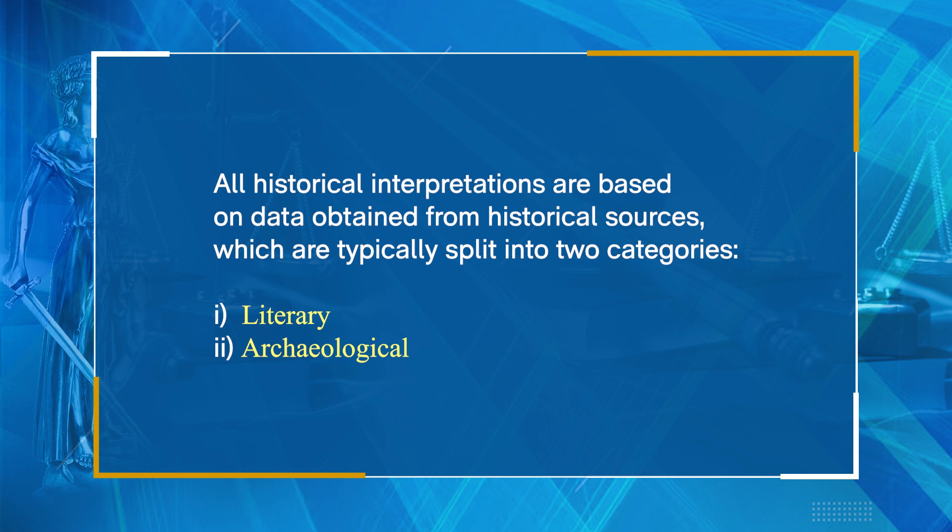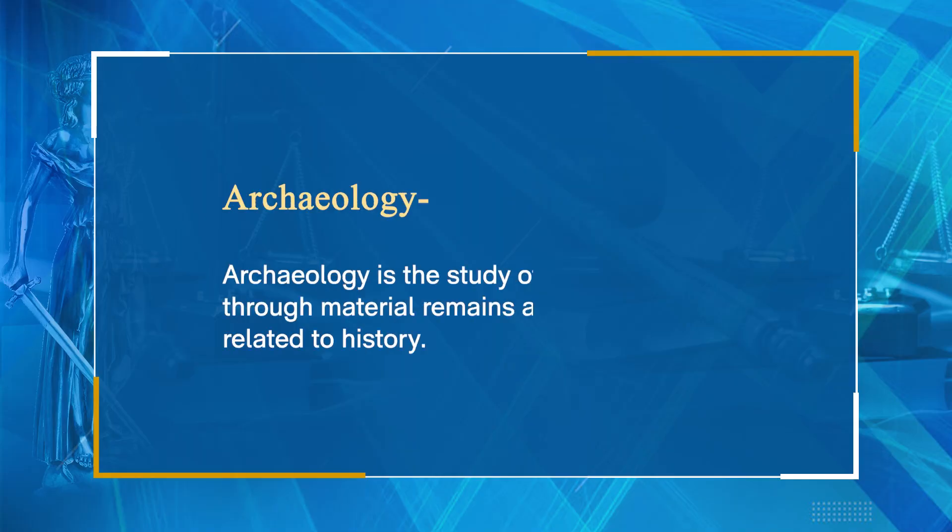Historical sources are typically split into two categories: literary sources, which include textual evidence, and material remains, which are categorized as archaeological sources. Literary sources encompass all texts whether lengthy, brief, written, or oral, whereas archaeological sources include all physical and material remains left by past human societies. These distinctions are not unchangeable — all remains from the past, including manuscripts, are material in nature. Some sources, such as coins, inscribed images, and inscriptions, can be regarded as both textual and material objects.